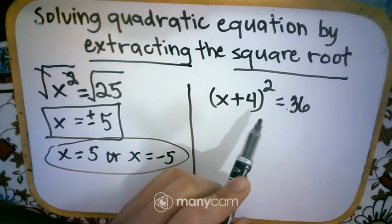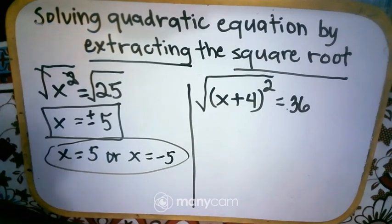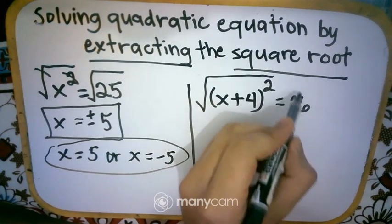And again, how are we going to remove the exponent? So we put radical sign or square root of. Then again, do it to the left, do it to the right.